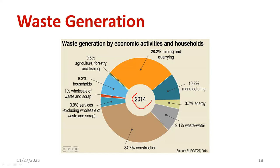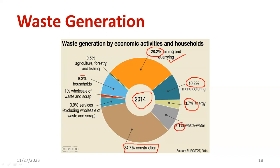There is a pie diagram. In the year 2014, from one survey, I found the contribution of waste from different sectors. Around 34–35% of waste is generated from construction. Around 28.2% is from the mining and quarry industry. 10.2% is from the manufacturing industry. 3.7% is from the energy sector, especially coal and fossil fuels. 9.1% belongs to wastewater. 8.3% is from the residential area. 0.8% is from the agricultural sector. 1% is from wholesale. 3.9% is from the service sector. These are approximate segmentations for waste generation.